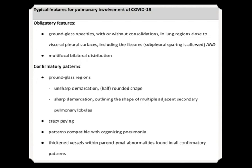Coming to the typical features before going into CORADS — these features are very important in categorization. The obligatory features are ground glass opacities with or without consolidations in lung regions close to the visceral pleural surfaces including the fissures, and multifocal bilateral distribution. Confirmatory patterns include unsharp demarcation of ground glass regions, half-round shaped sharp demarcation outlining multiple adjacent secondary pulmonary nodules, the crazy paving pattern, organizing pneumonia pattern, and thickened vessels within the parenchymal abnormality.